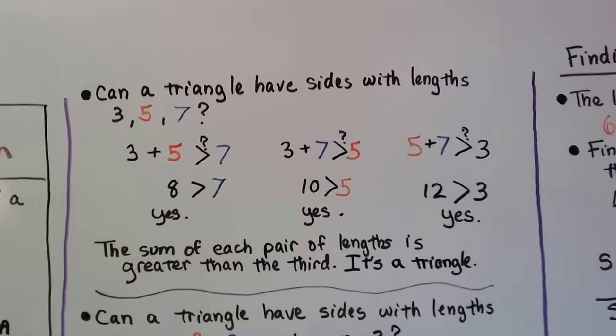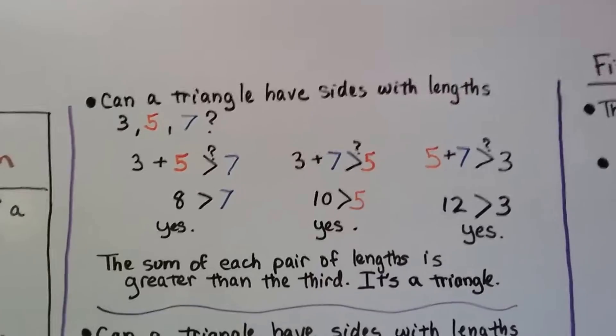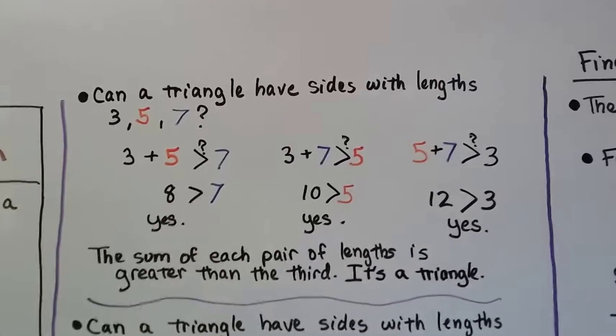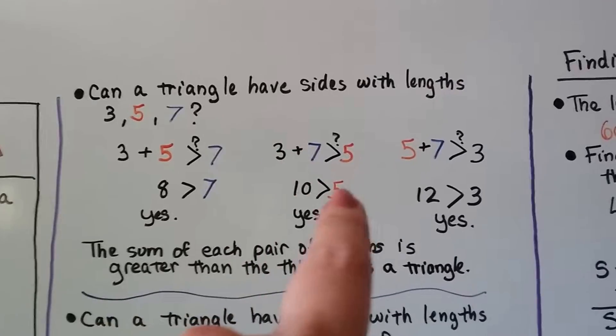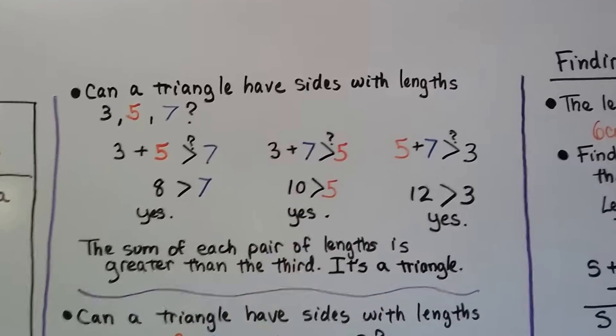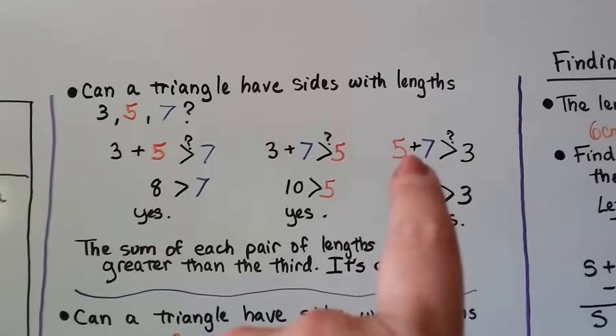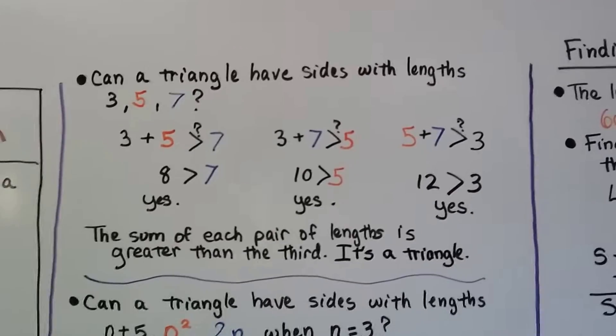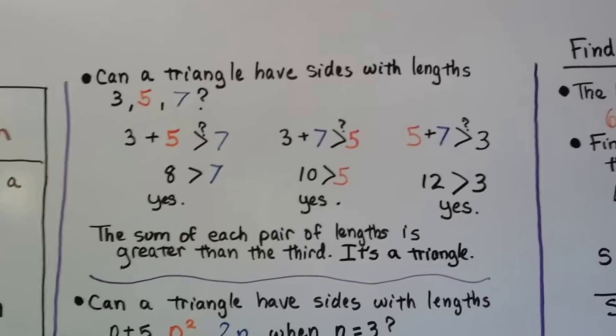Can a triangle have sides with lengths 3, 5, 7? We can add the 3 and 5, we get an 8. 8 is greater than 7, yes. We can add the 3 and 7, that's 10, it's greater than 5, yes. And we can add the 5 plus the 7, that's 12, that's greater than 3, yes. The sum of each pair of lengths is greater than the third, it's a triangle.